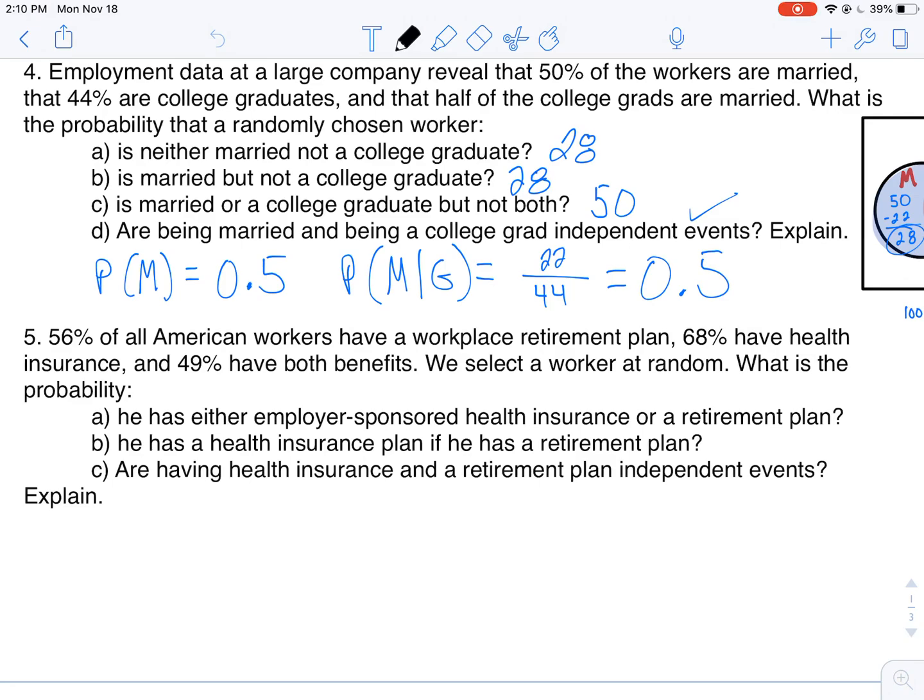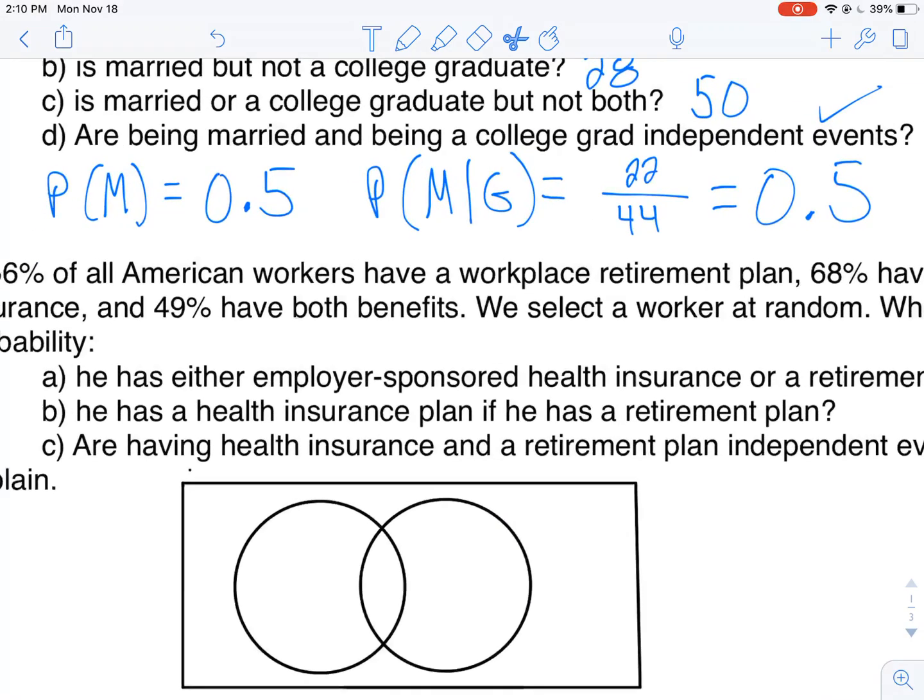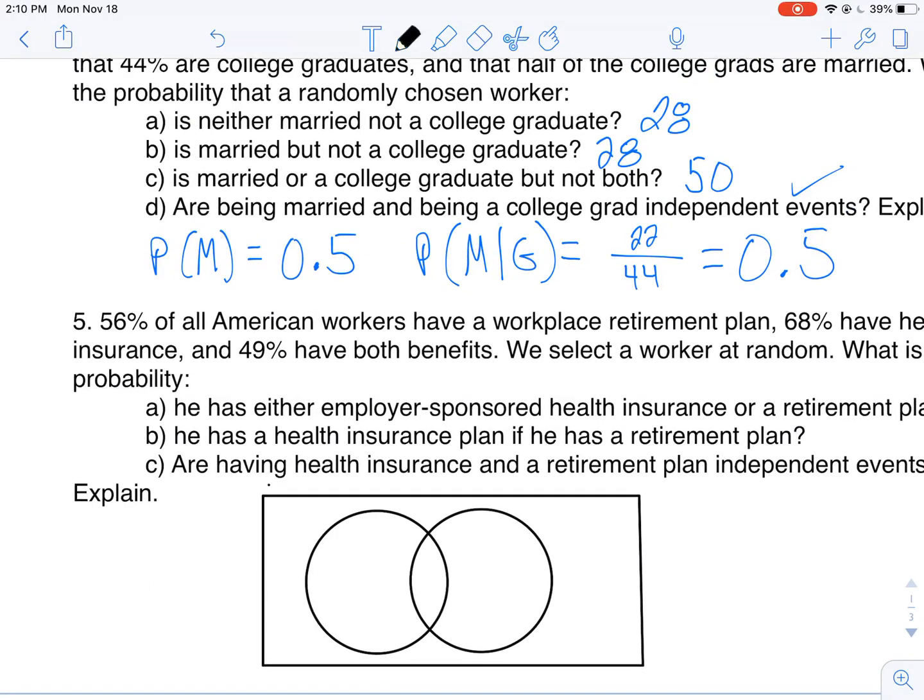We're gonna start out first making a Venn diagram. Again, why do I do this? I like to have it visually for myself. Some people don't necessarily need this, they can just internalize the whole thing. I need this. I'm gonna make my little circles here. So I'm more focused on retirement plan and health insurance.